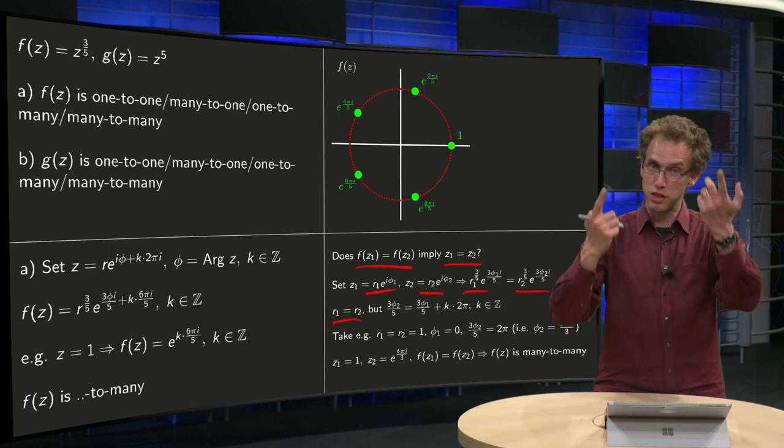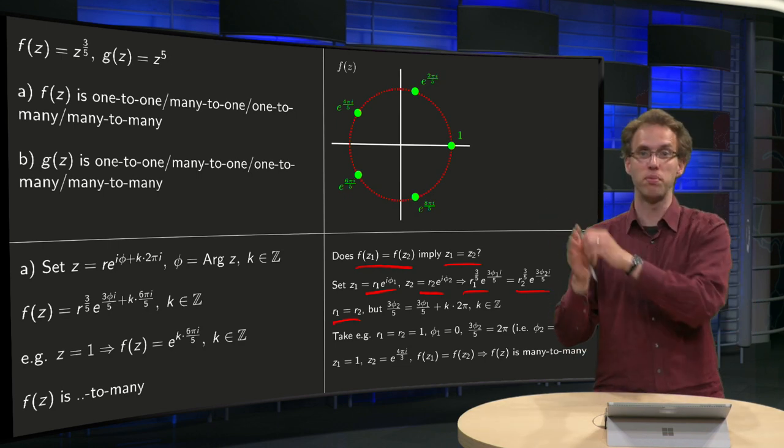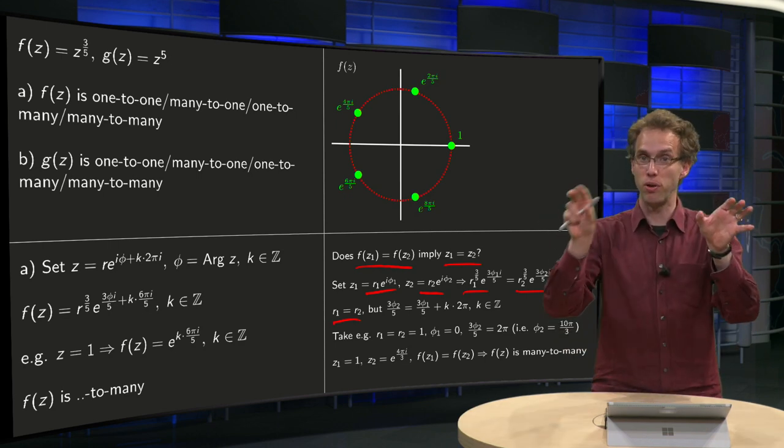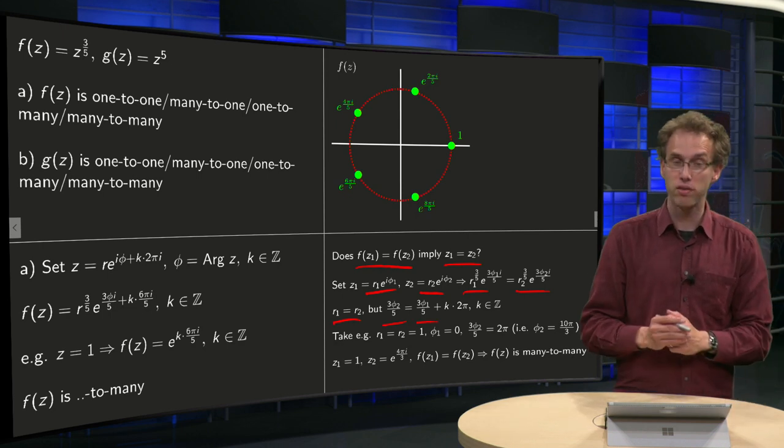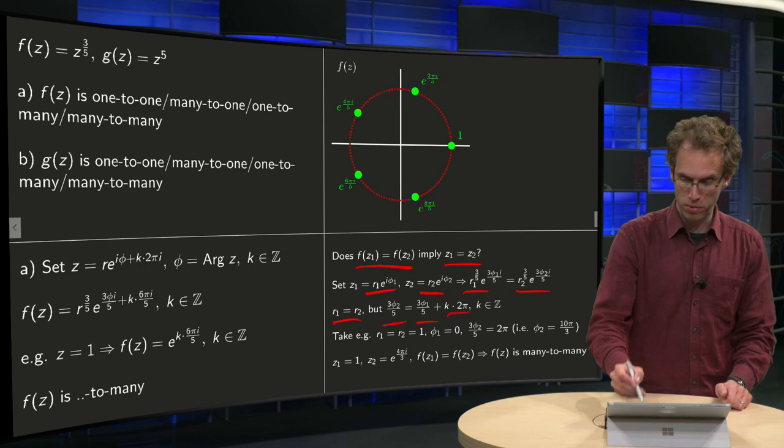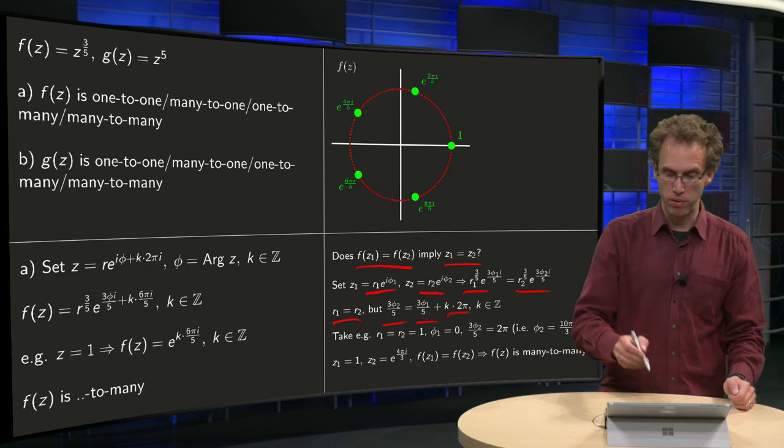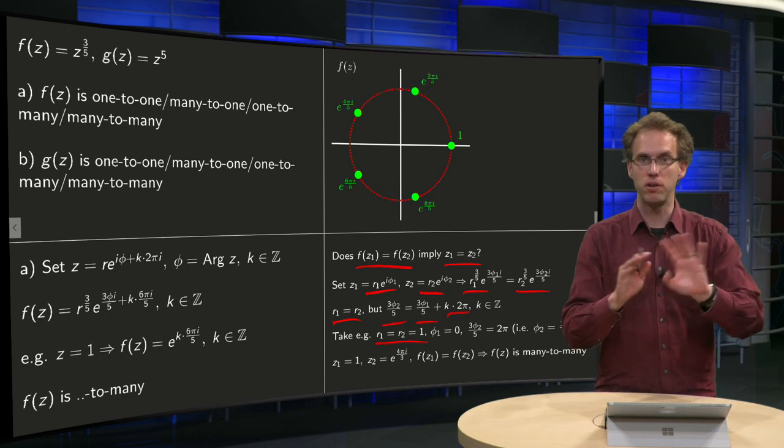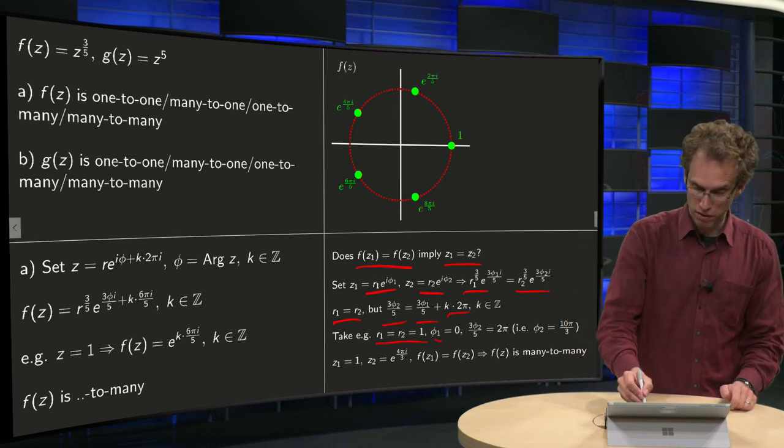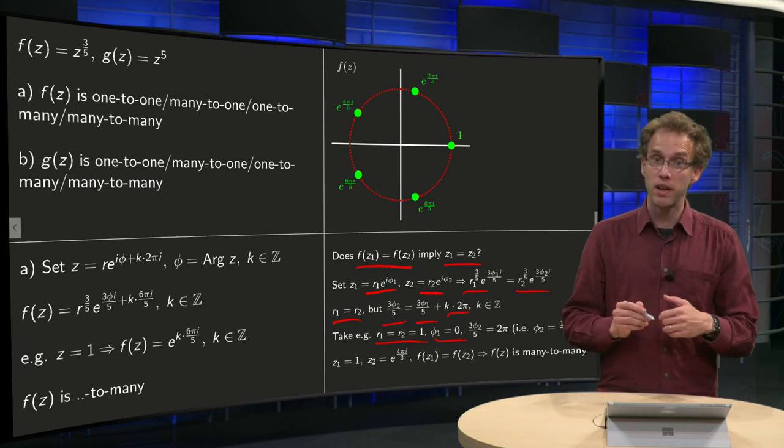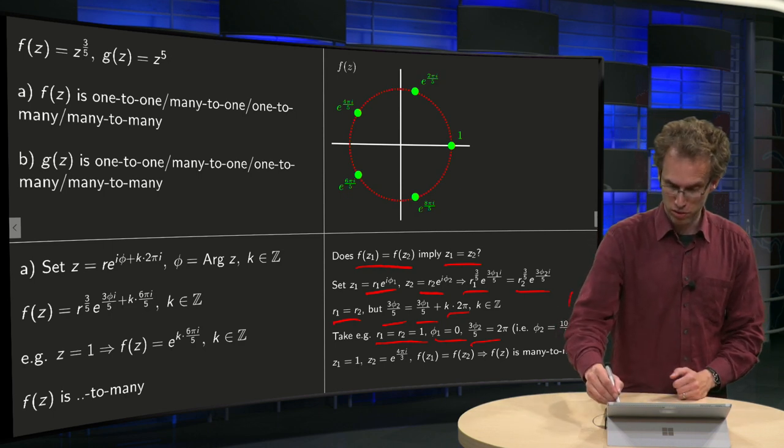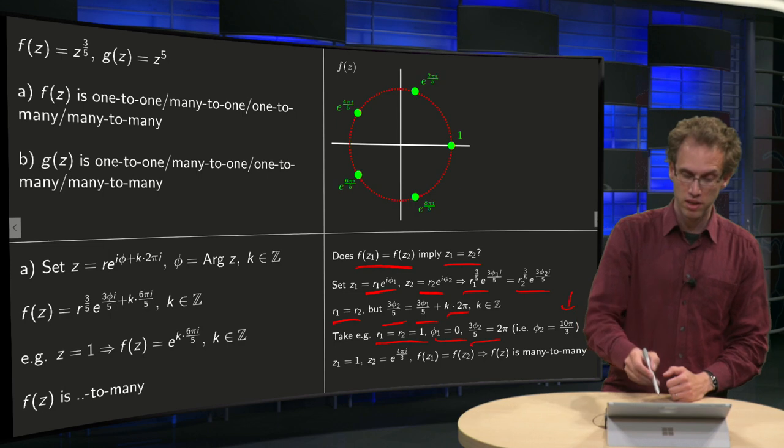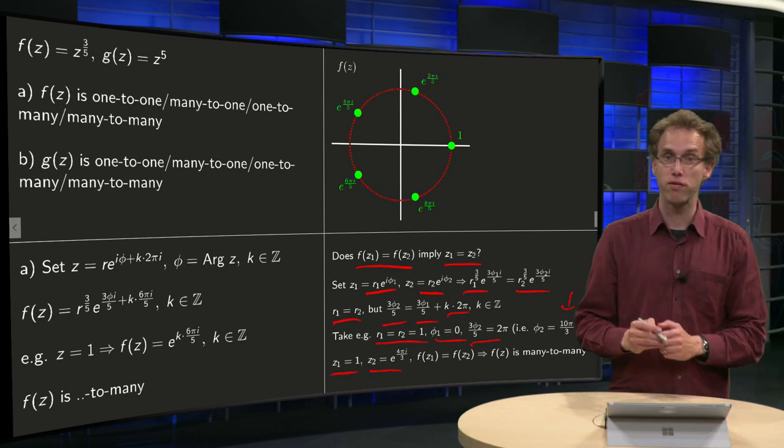But we also see that what's in the exponential, e to the power of something equals e to the power of some other thing if they differ by a factor of 2pi. So 3 times phi2 over 5 equals 3 times phi1 over 5 plus some multiple of 2pi. And if we take for example r1 equals r2 equals 1, we don't care about that one too much, but if we set phi1 equals to 0, then we can set this combination equal to 2pi or phi2 equals to 10pi over 3. If you compute that, you get z1 equals 1 and z2 equals e to the power of 4pi over 3.